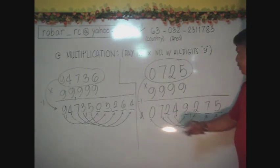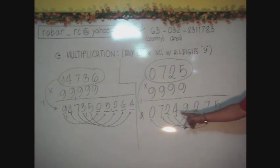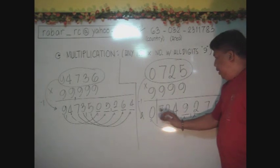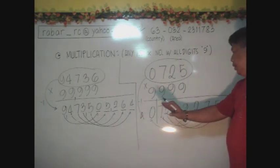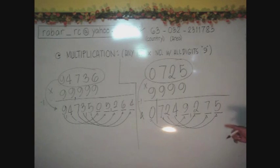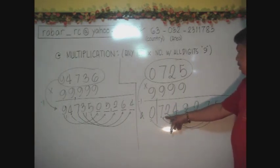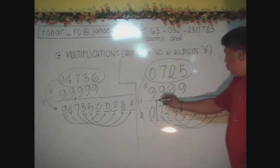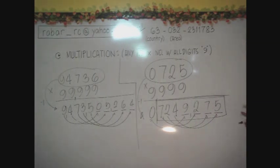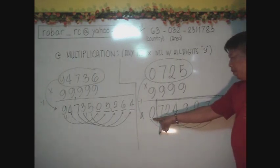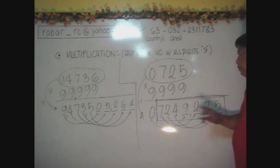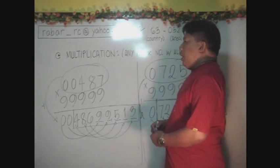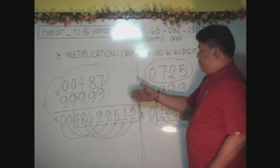And the answer therefore is 7,249,275. You can have this, you can exclude the 0 because 0 has nothing, has no value. Then we can read it as 7,249,275. This will serve as our answer. But remember, the 0 here is very important in order to have this value or to have this number. So that completes our topic here about this multiplication.